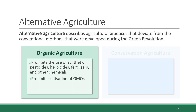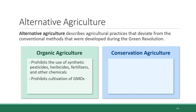In conservation agriculture, the priority is soil health. There are three tenets that support this priority. First, achieve minimal disturbance to the soil by reducing the amount of tilling or by not tilling the soil at all, because tilling disturbs the soil ecosystem and diminishes its ability to retain the nutrients and beneficial organisms that contribute to plant health. It also exacerbates soil erosion.